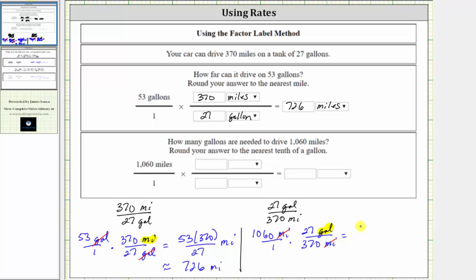Multiplying in the numerator, we have 1,060 times 27, divided by the denominator of 370, and the units are now gallons.